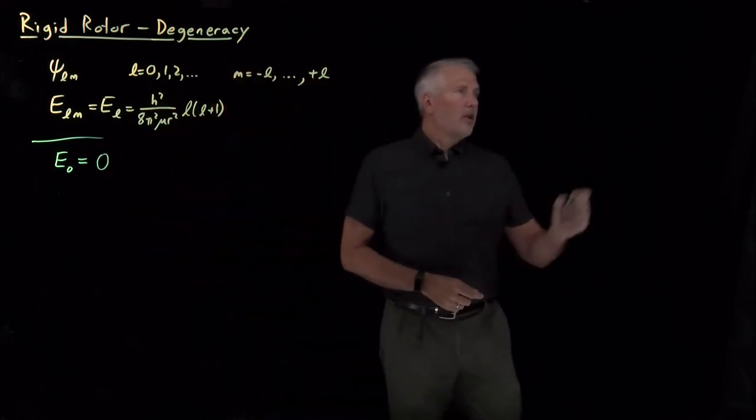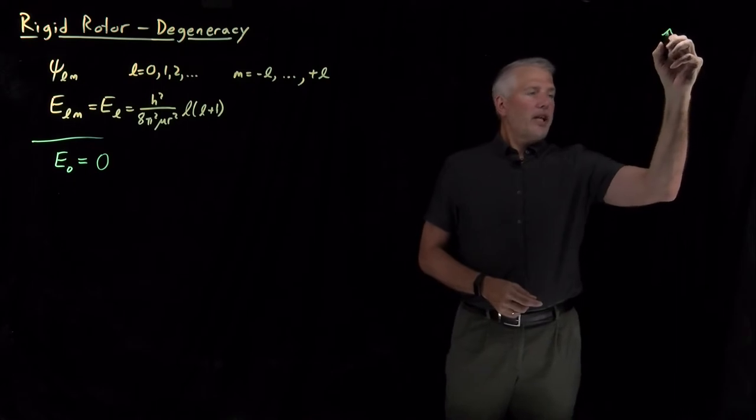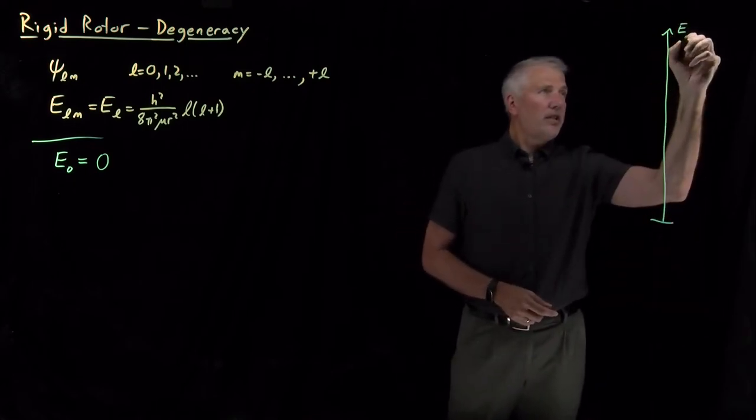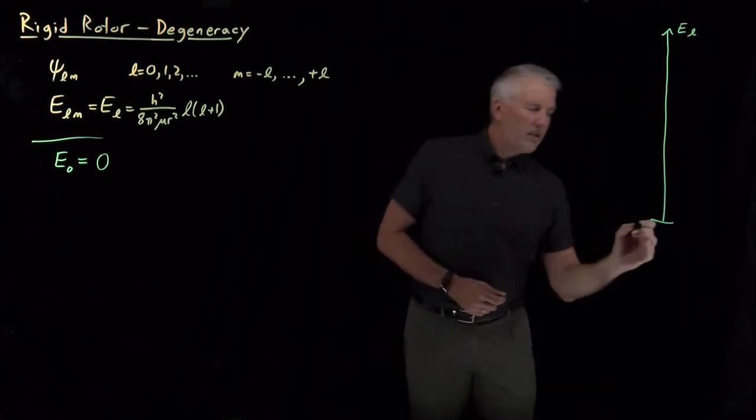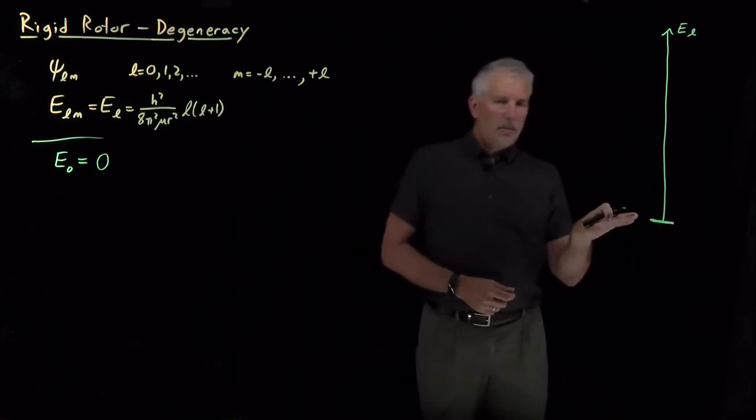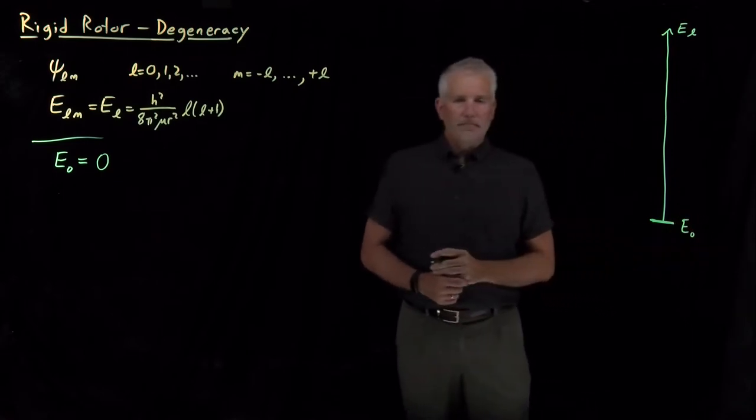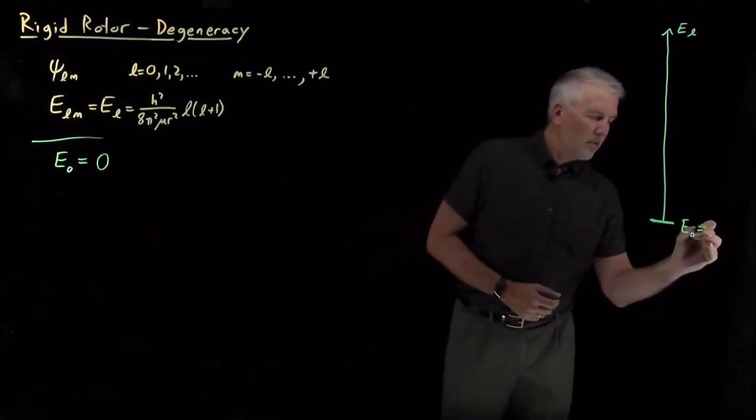What we'll do is, over here, I'll write an energy ladder. Here are the energies of the different states of the rigid rotor. Down at the bottom, where 0 is, that is the energy of the ground state, E₀, and that's equal to 0.